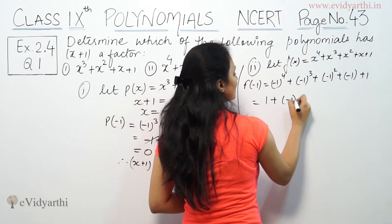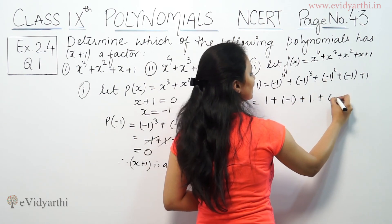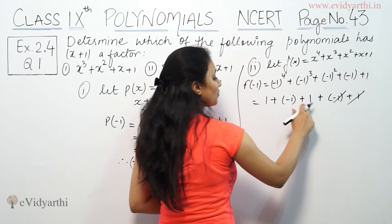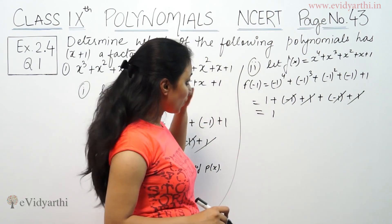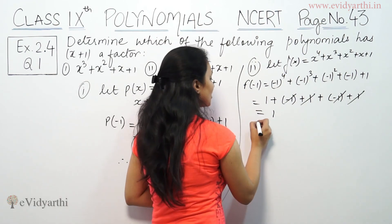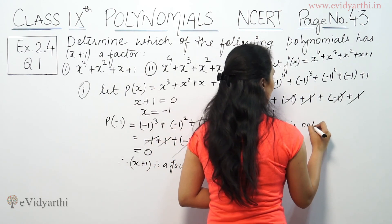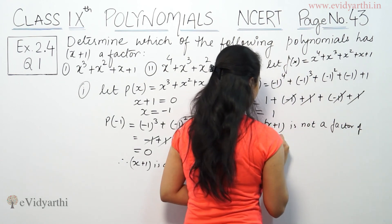So minus 1 to the power 4 is 1, minus 1 cubed is minus 1, minus 1 squared is 1, plus minus 1, plus 1. Positive 1 negative 1 cancel, positive 1 negative 1 cancel, we get plus 1 remaining. That means x plus 1 is not a factor of f(x).